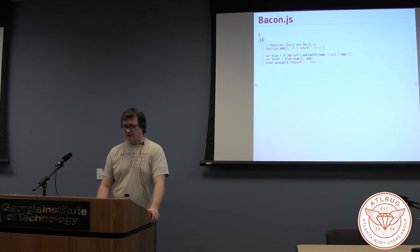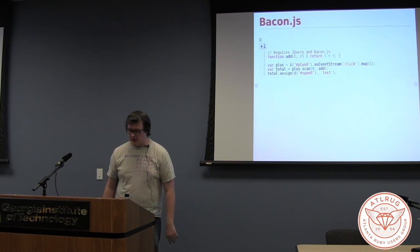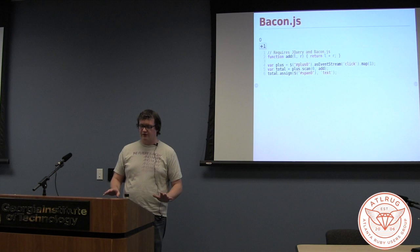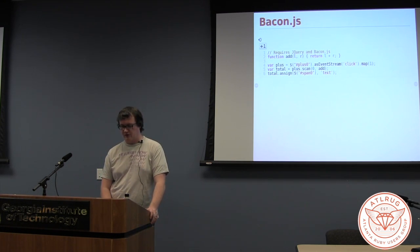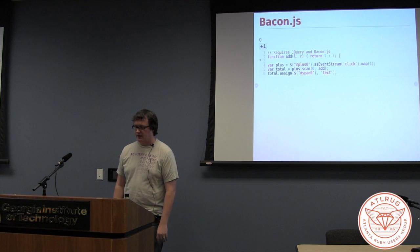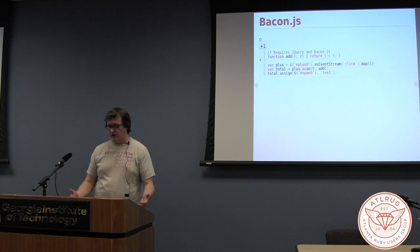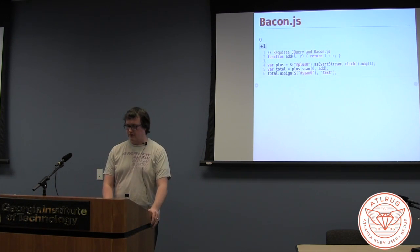So here's a very first example. This is very simple. We've got a field at the top — it's just a little span with a zero in it. We've got a button with a plus one on it. And I define a function called add. It just takes two arguments, adds them together, and returns it.